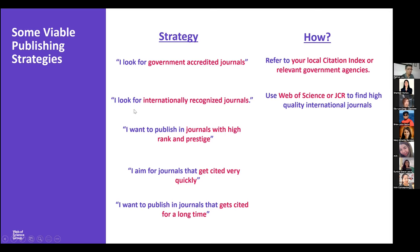The next strategy is internationally recognized journals. Now that you have some experience in publishing, you want to go into the big sea and see the world. Look for journals indexed in international databases like Web of Science. The reason I say Web of Science rather than Google Scholar is because of our curation — you want to make sure you are not publishing in predatory journals. When you use Web of Science or even Journal Citation Reports, you will be able to find high-quality international journals to publish in.